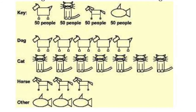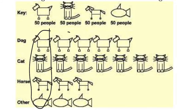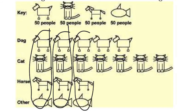This second version has the same key where each animal represents 50 people, but this time it's more accurate because each of the animals are about the same size — everything is lining up. So it's easier to tell when things are scaled correctly that the category with the most is actually the cats. Since everything is scaled equally, it's much easier to tell. It's no longer misleading.